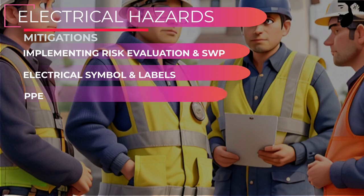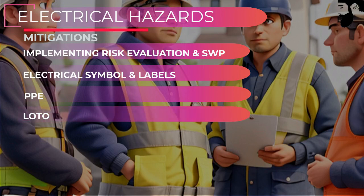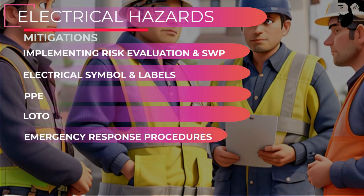Personal protective equipment (PPE) for electrical work, such as insulated gloves, safety glasses, and ARC flash suits, should be chosen and used appropriately. Lockout/tagout measures, which ensure that equipment is de-energized before maintenance or testing, as well as emergency response procedures in the case of an electrical incident, are examples of such processes.